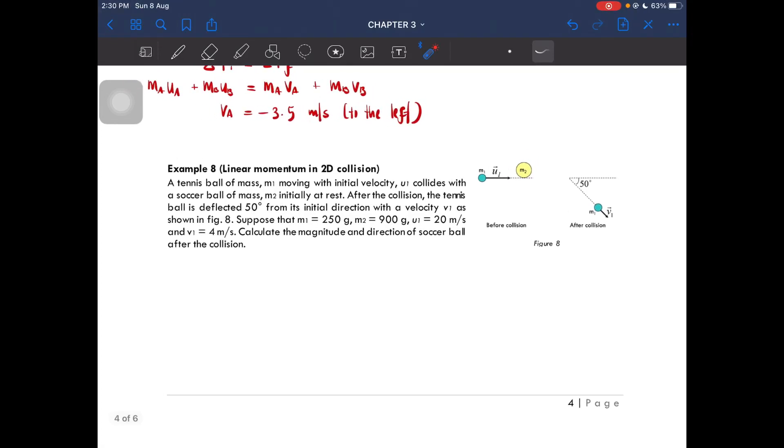Okay, example eight. This one is a 2D collision. A tennis ball of mass m1 is moving with initial velocity u1 and collides with a soccer ball of mass m2 initially at rest. So we know that u2, the initial velocity, is zero.